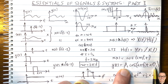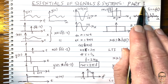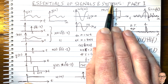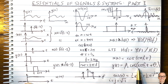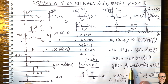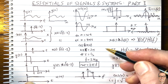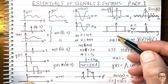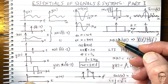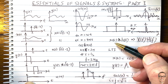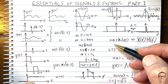So in part one we've covered the essentials of signals and systems in terms of functions and the Fourier transform. In part two we'll be looking at sampling, Laplace transforms, and z-transforms. If you found this video helpful please hit the like button, subscribe to the channel, and check out the description below for a full categorized listing of all the videos on the channel.